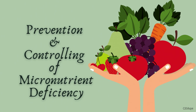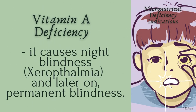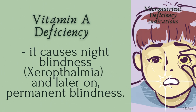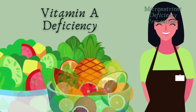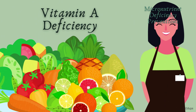For the prevention and controlling of micronutrient deficiency: Vitamin A deficiency causes night blindness or xerophthalmia and later permanent blindness. For prevention, you need regular consumption of Vitamin A-rich foods such as animal products, orange and yellow fruits, and dark green leafy vegetables.